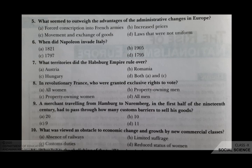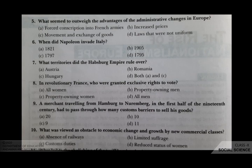The next question: what was viewed as an obstacle to economic change and growth by new commercial classes? Your options are A absence of railways, B limited suffrage, C custom duties, D reduced status of women. The correct answer is C, custom duties.